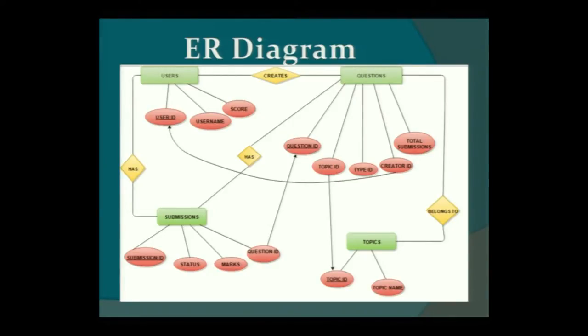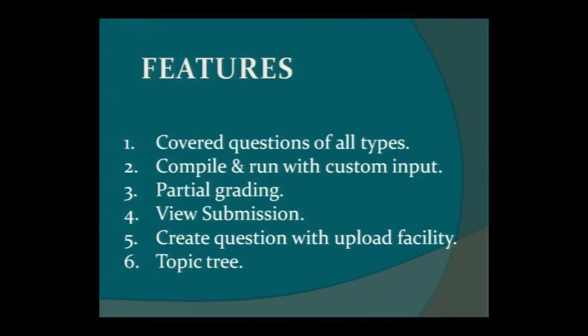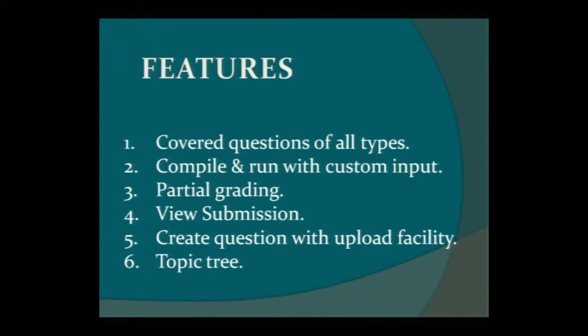This is the ER diagram, which shows the schema of our database. Most importantly we have four tables: users, questions, submissions, and topics. Each user can create questions and has submissions. Each question will have a question ID and many submissions, and each question will belong to several topics. There is a relationship between every table so that we can join many tables and query out results. The various features of the website are: it covers all kinds of questions; you can compile and run with custom inputs; there is partial grading depending on how many test cases you pass; you can view your submissions; you can create questions with an upload facility; and there is a topic tree.